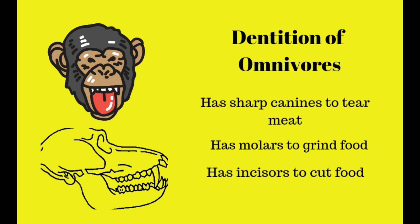Omnivores have sharp canines to tear meat, molars to grind food, and incisors to cut food.